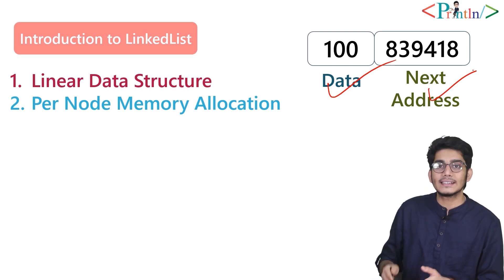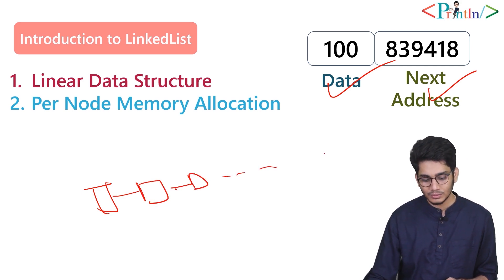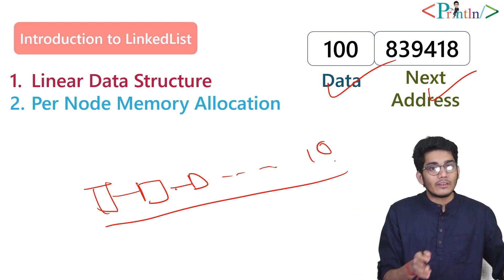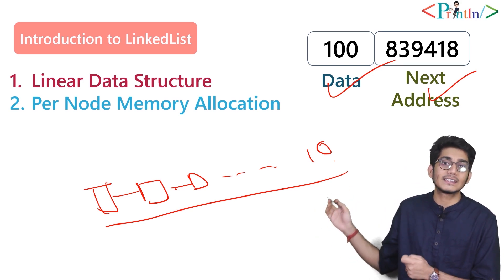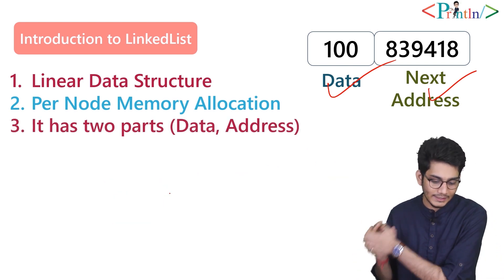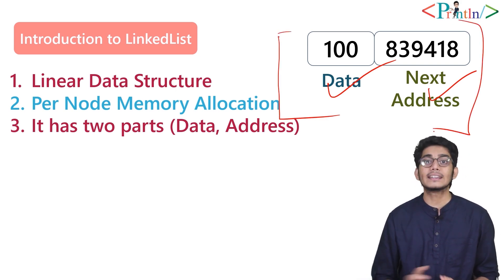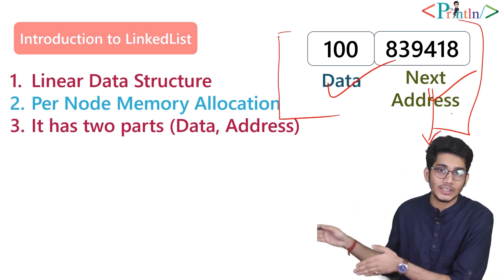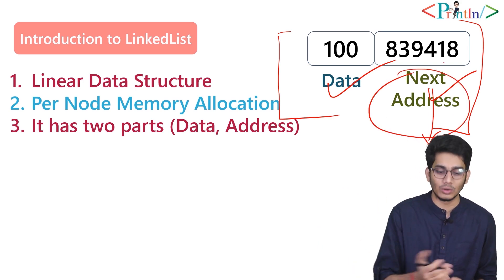We allocate only as much memory as we need, so there is no wastage of memory. For example, if we need 10 blocks, we keep adding up to 10. Every node in a linked list has two parts: one is data and another one is address. Whenever we declare a node within a linked list, it has a data part and an address part.